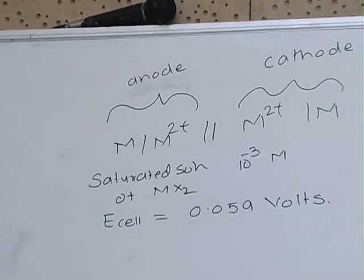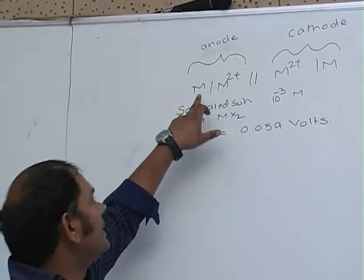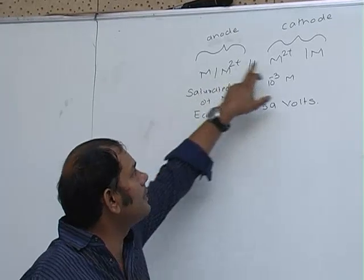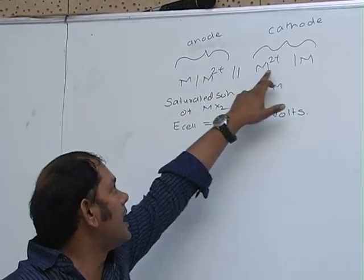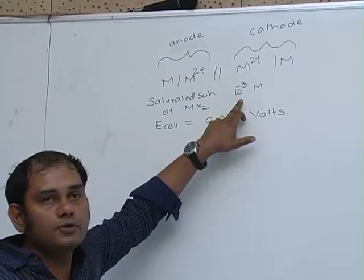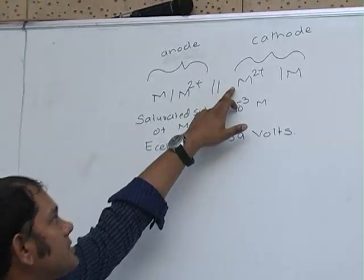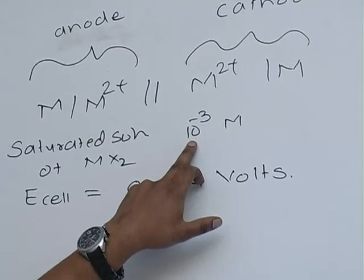In this problem, we have a concentration cell with metal M as anode and metal M as cathode. M²⁺ solution is given here with M²⁺ concentration of 10⁻³ molar. At the anode, M²⁺ is coming from a saturated solution of Mx₂.